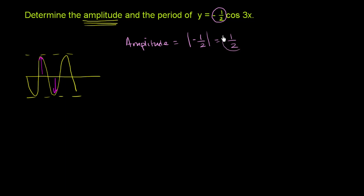You might say, well, why do I not care about the sign? Why do I take the absolute value of it? The negative just flips the function around — it's not going to change how much it sways between its minimum and maximum position. You also have to remember that a cosine function or a sine function varies between positive 1 and negative 1 for a simple function. So this coefficient is just multiplying that positive 1 or negative 1.